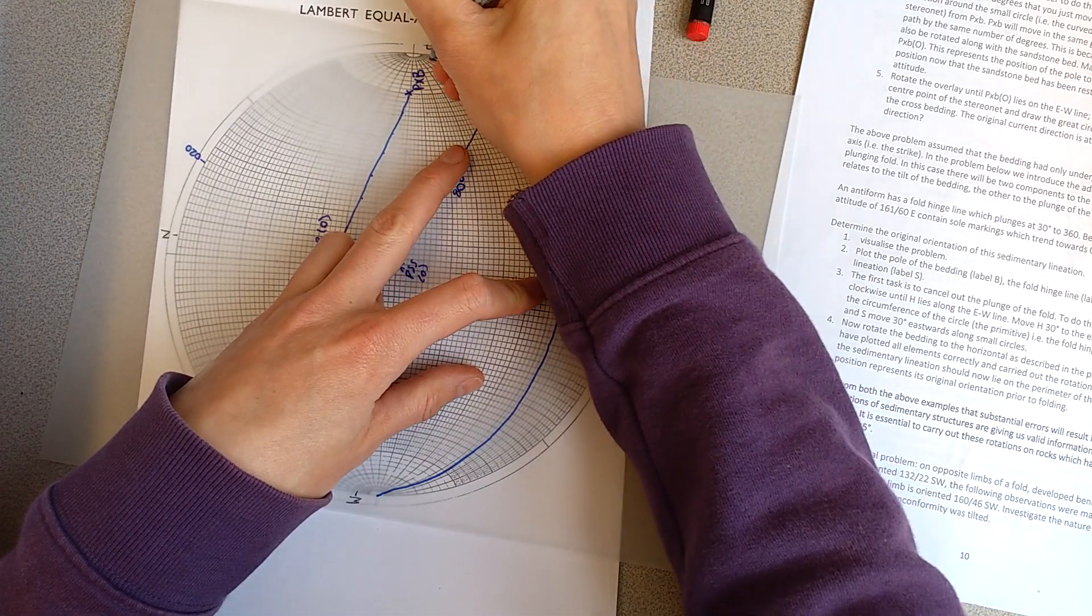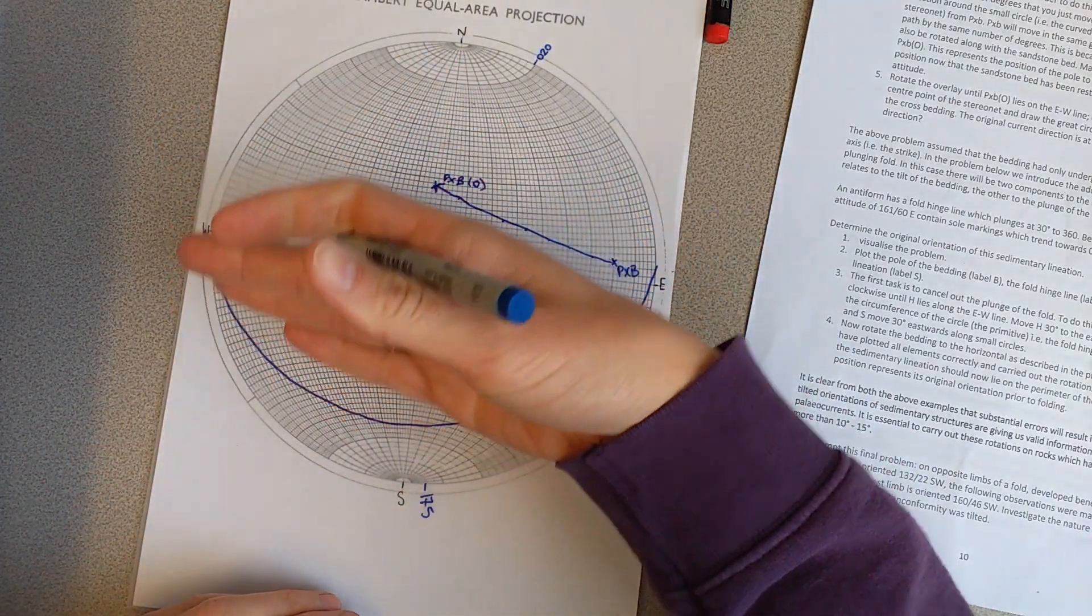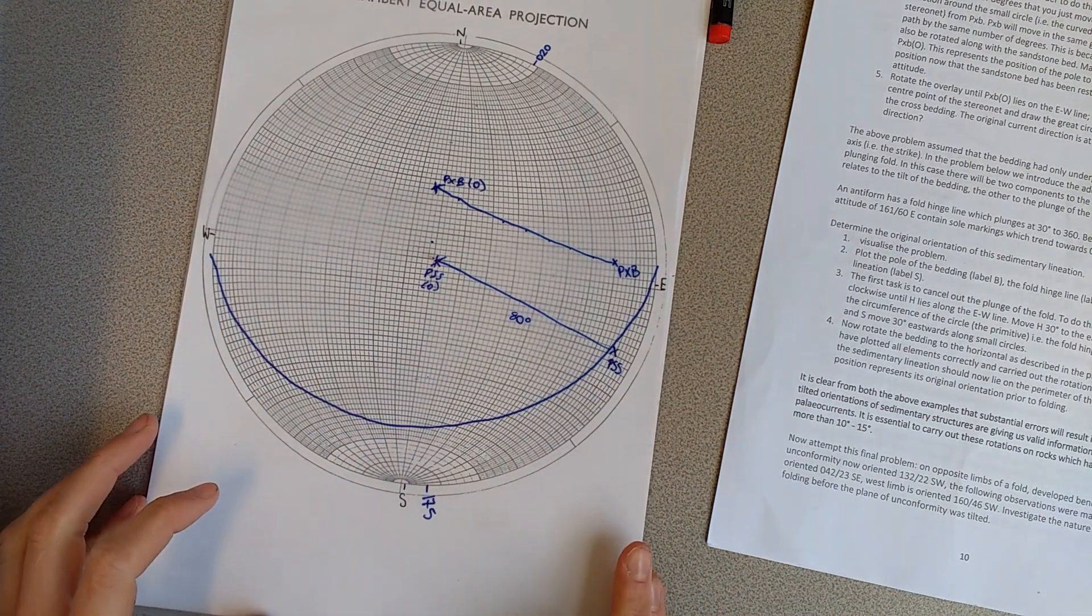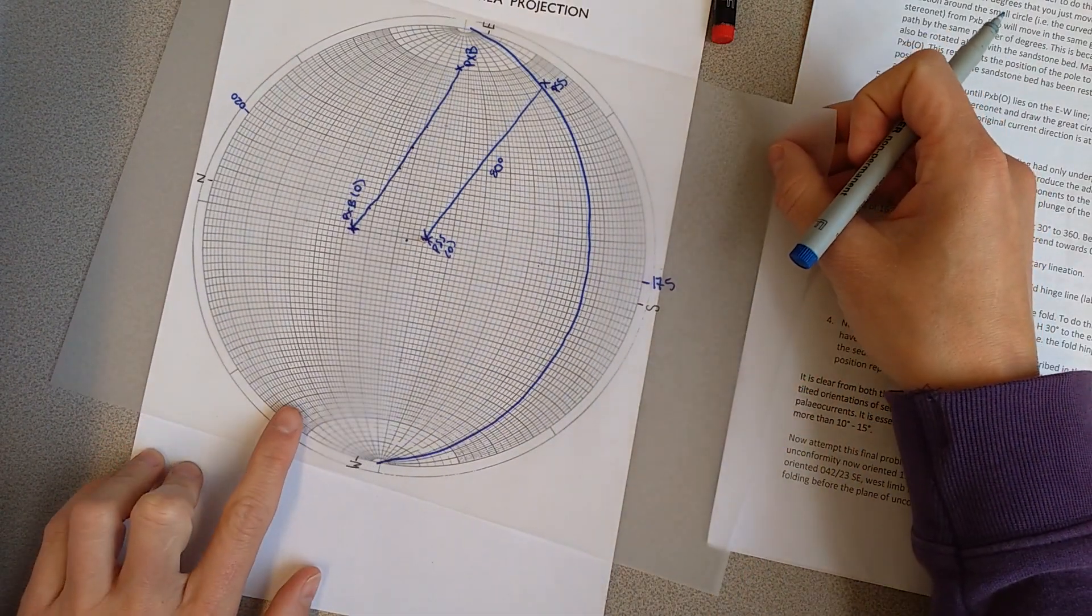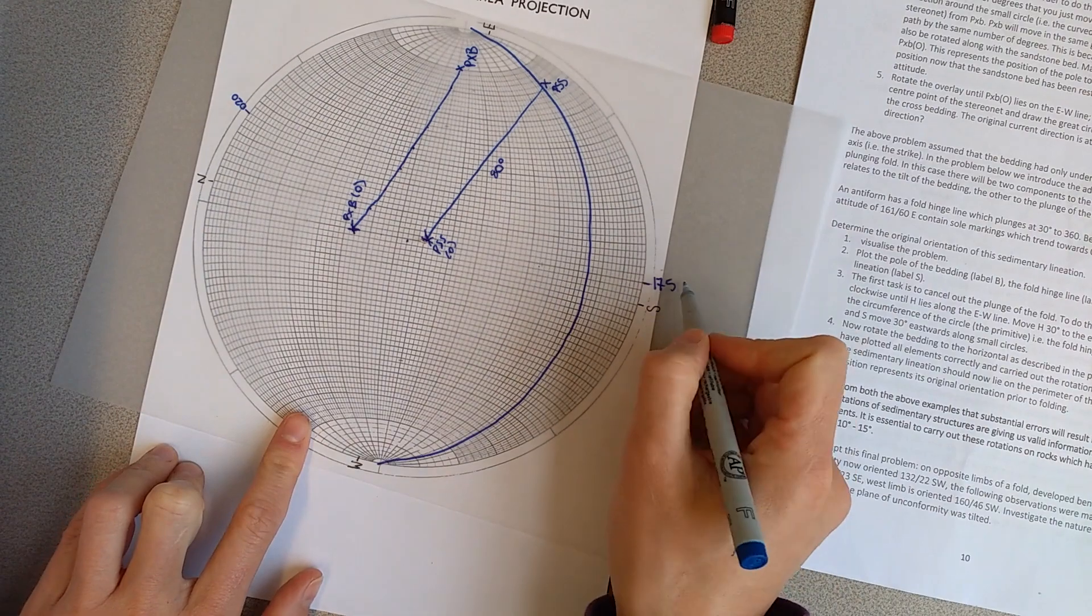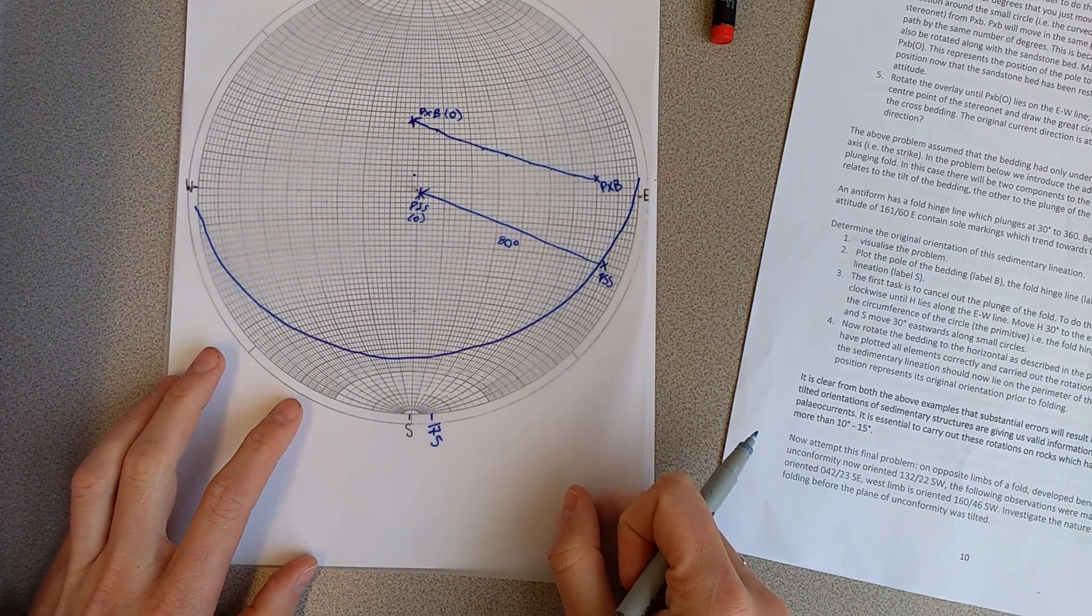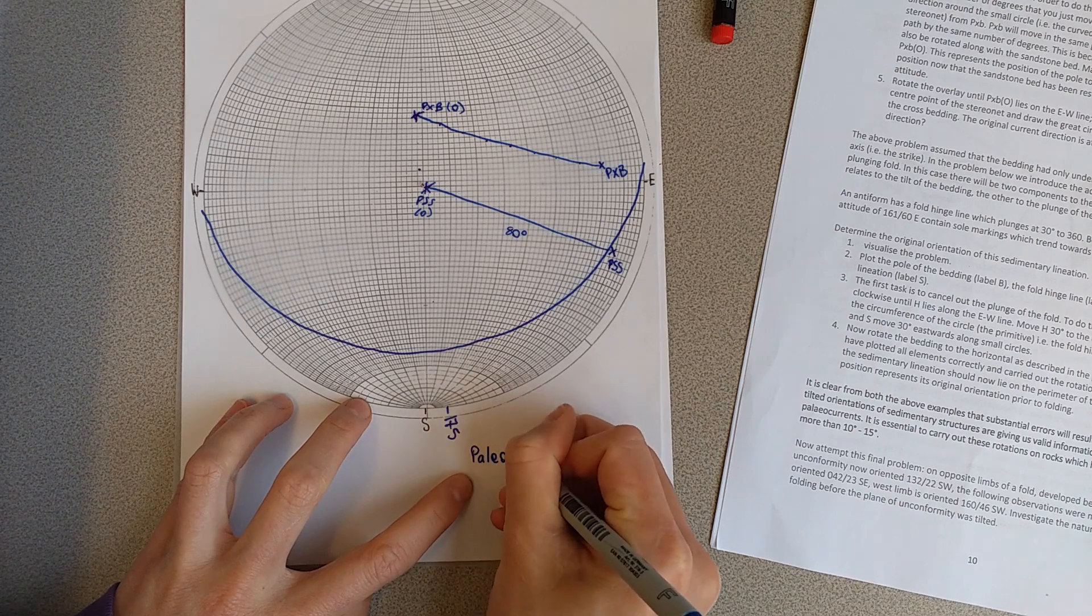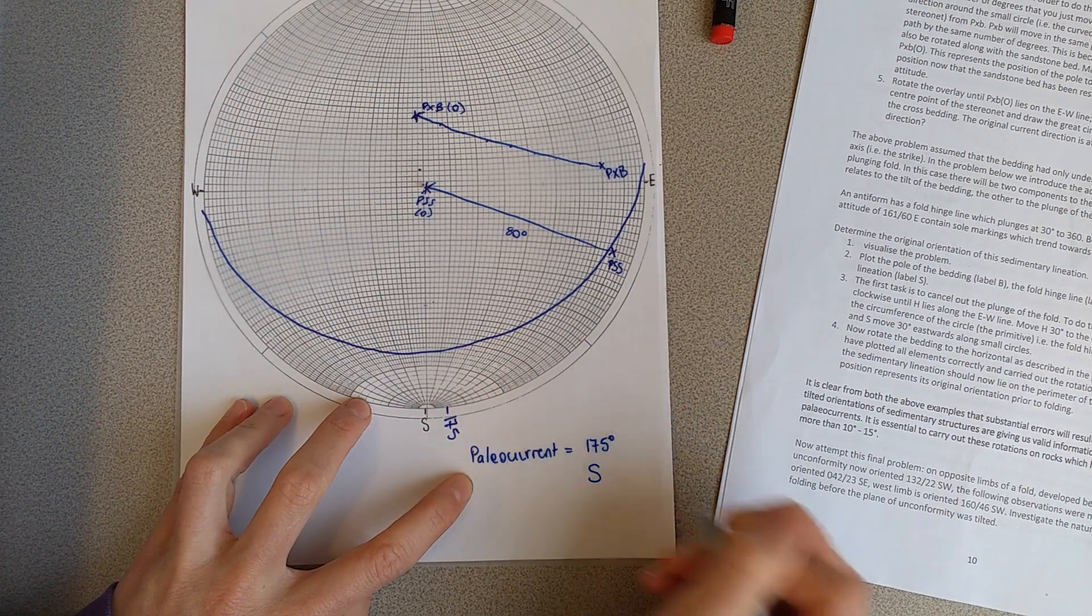You can see this is basically striking east west and it is dipping down to the south, so our cross bedding is now dipping to the south. If we want to find out the paleo current, if we look on the east west line, that was our pole, this is our plane, and then this is the direction. It's actually the same, 175 as the pole, so it's sort of 90 degrees to what the original cross bedding was. The paleo current is towards 175 degrees or towards the south.